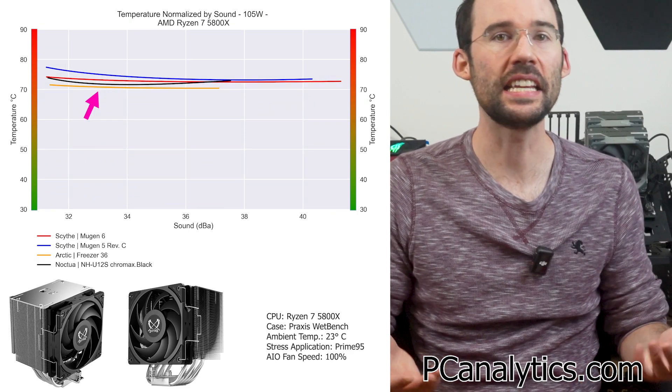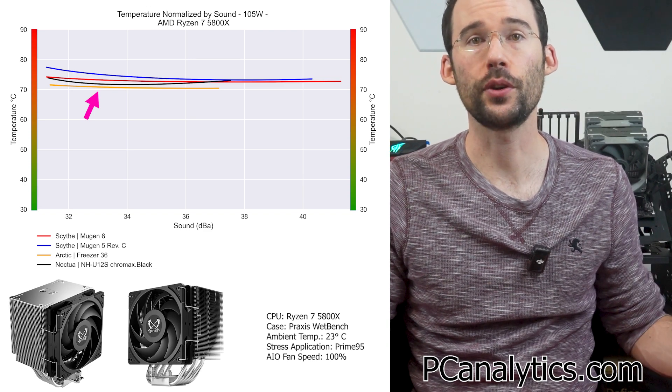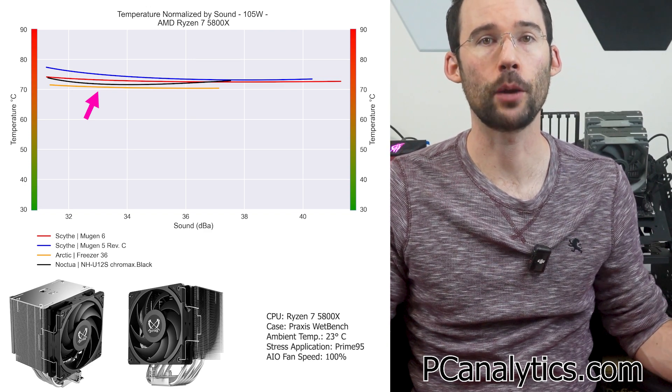As we turn up the heat to 105 watts, we can see that the Mugen 6 shows improvement over the Mugen 5, but runs slightly hotter than the Freezer 36 and the NH-U12S at comparable noise levels.